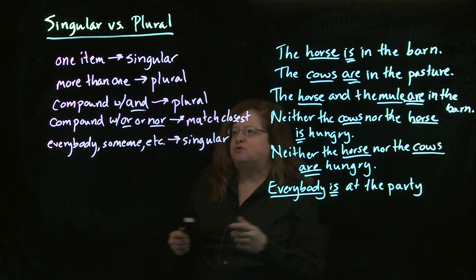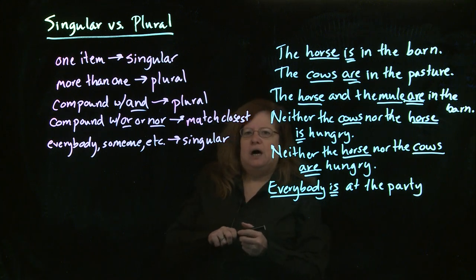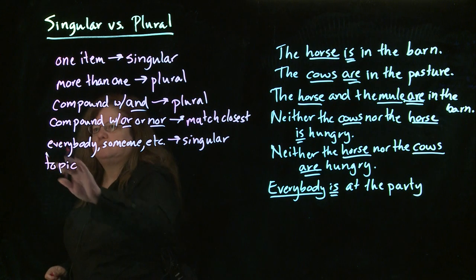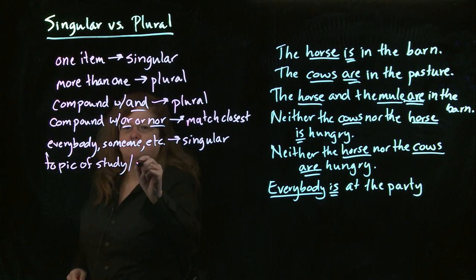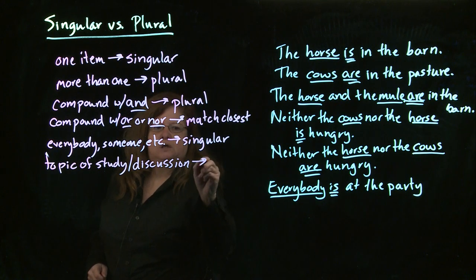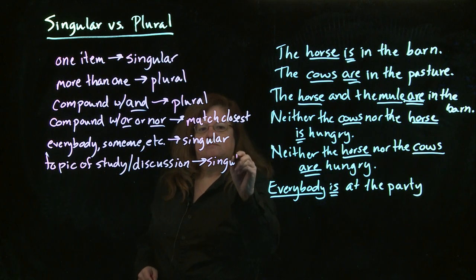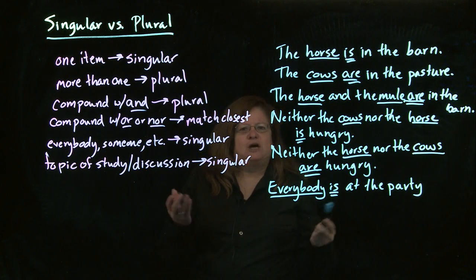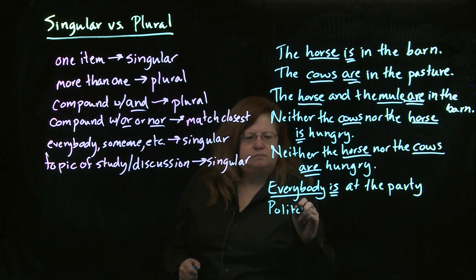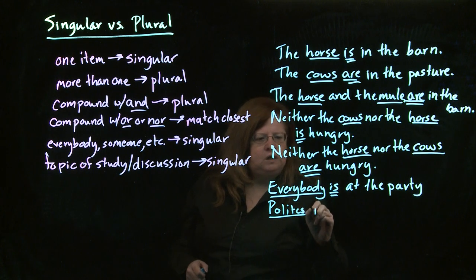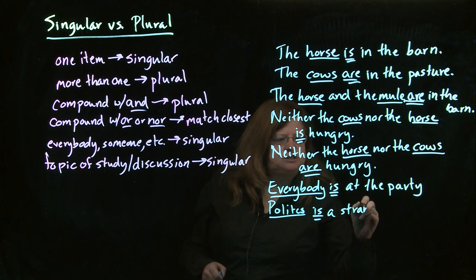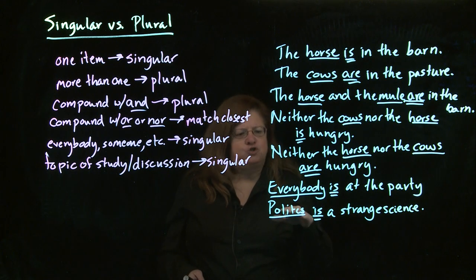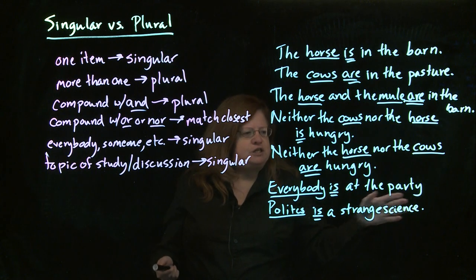Some other things that are a little counterintuitive: one is when you have a topic of study or discussion. This one is also going to be singular. When you're talking about, for example, politics — I might say 'politics is a strange science.' Even though it looks like politics ought to be plural, we actually treat it as singular because it's a topic of study. So we say 'politics is a strange science.'